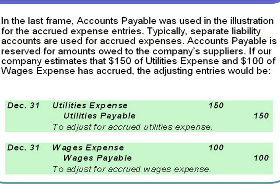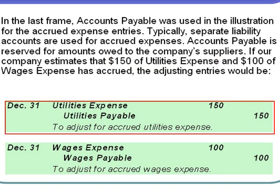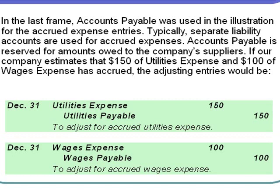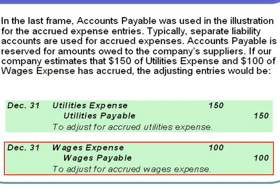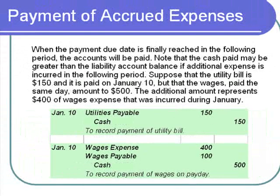Accounts payable is reserved for amounts owed to the company's suppliers — the companies that our company bought its equipment, supplies, or inventory from. If our company estimates that $150 of utilities expense has accrued by the end of December, the adjusting entry would be: debit utilities expense $150, and instead of crediting accounts payable, credit a utilities payable liability account. If our company estimates that $100 of wages expense has been incurred by December 31st, the credit would go to wages payable for $100, and the debit would go to wages expense for $100.